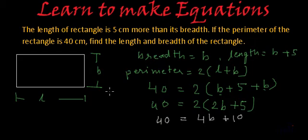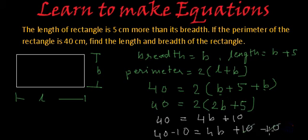So if we subtract 10 both sides, we will get 40 minus 10 will be equal to 4B plus 10 minus 10. So this plus 10 and minus 10 will get cancelled. From here if we write over here, 40 minus 10 is 30, and this will be equal to 4B.